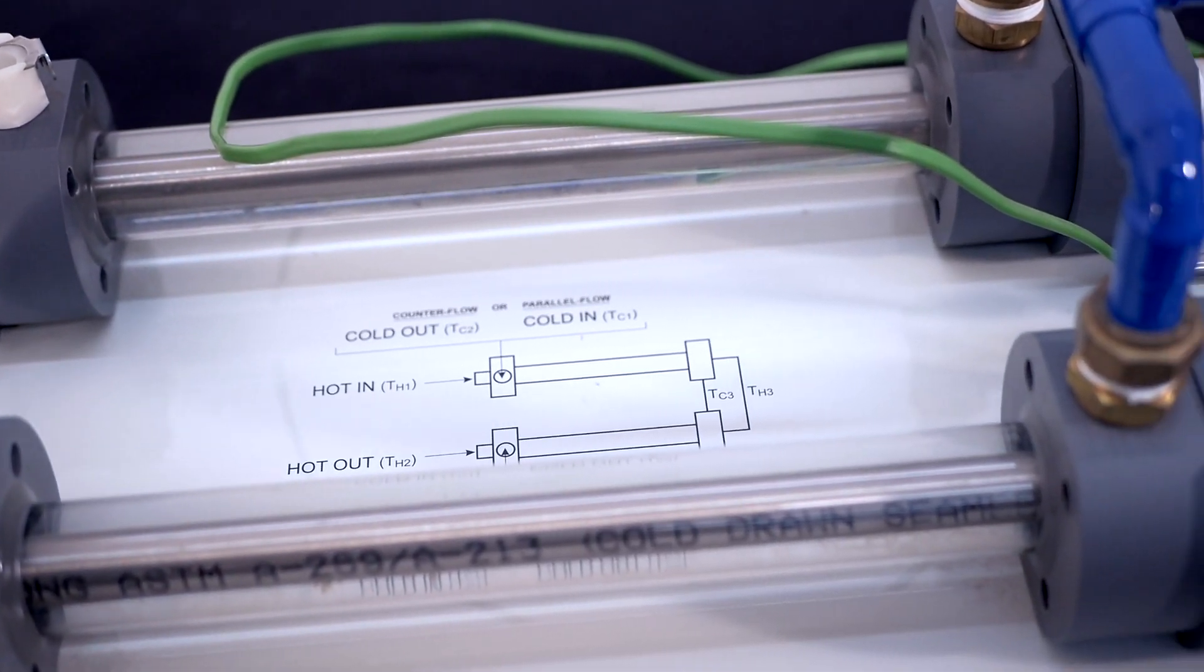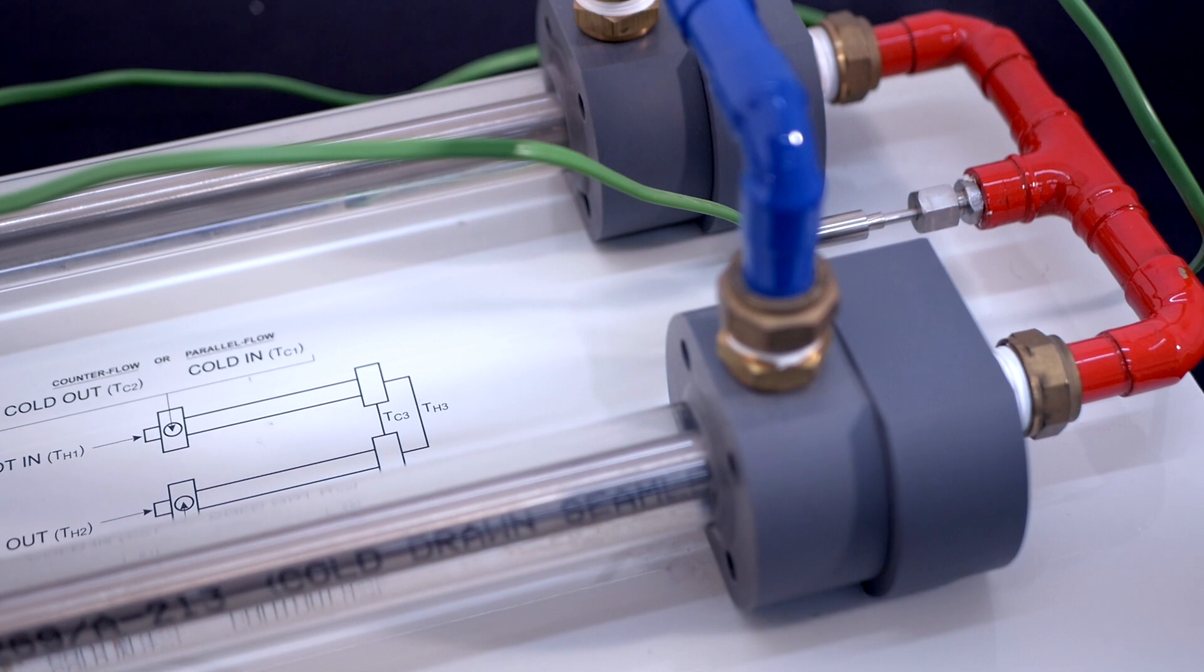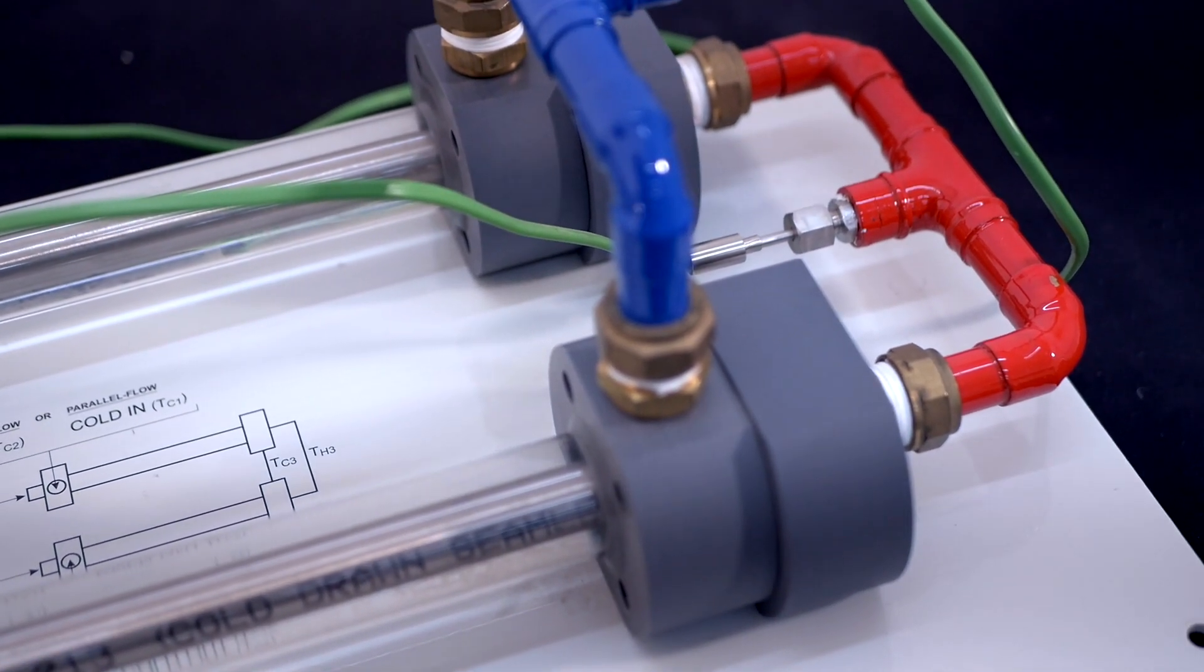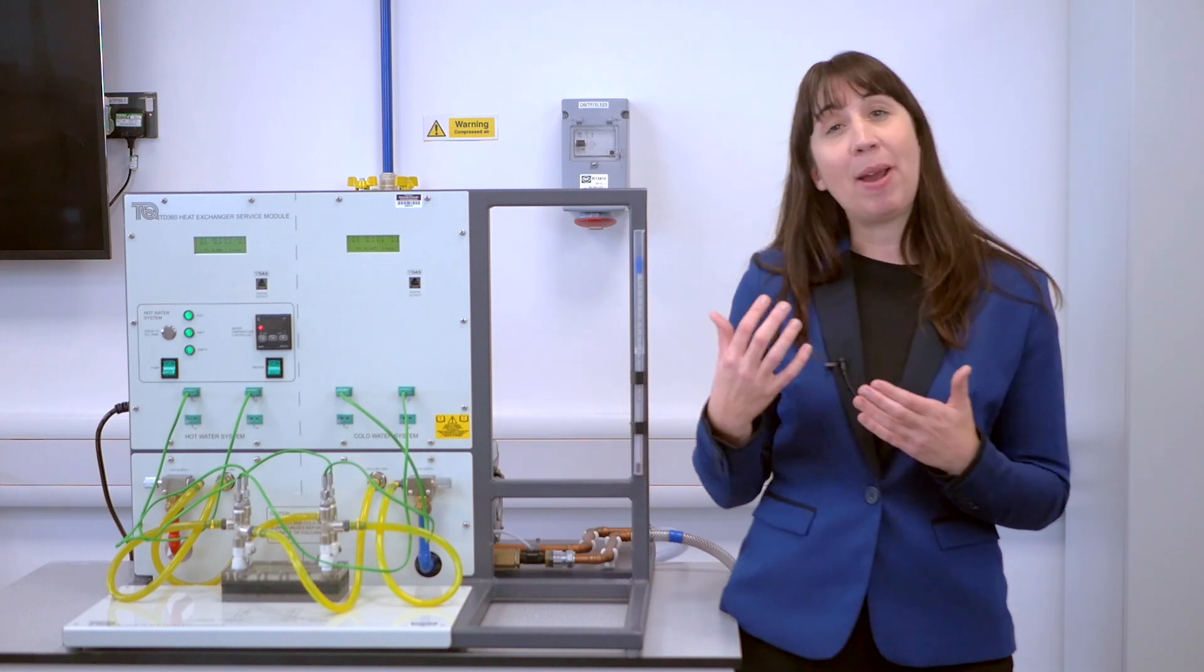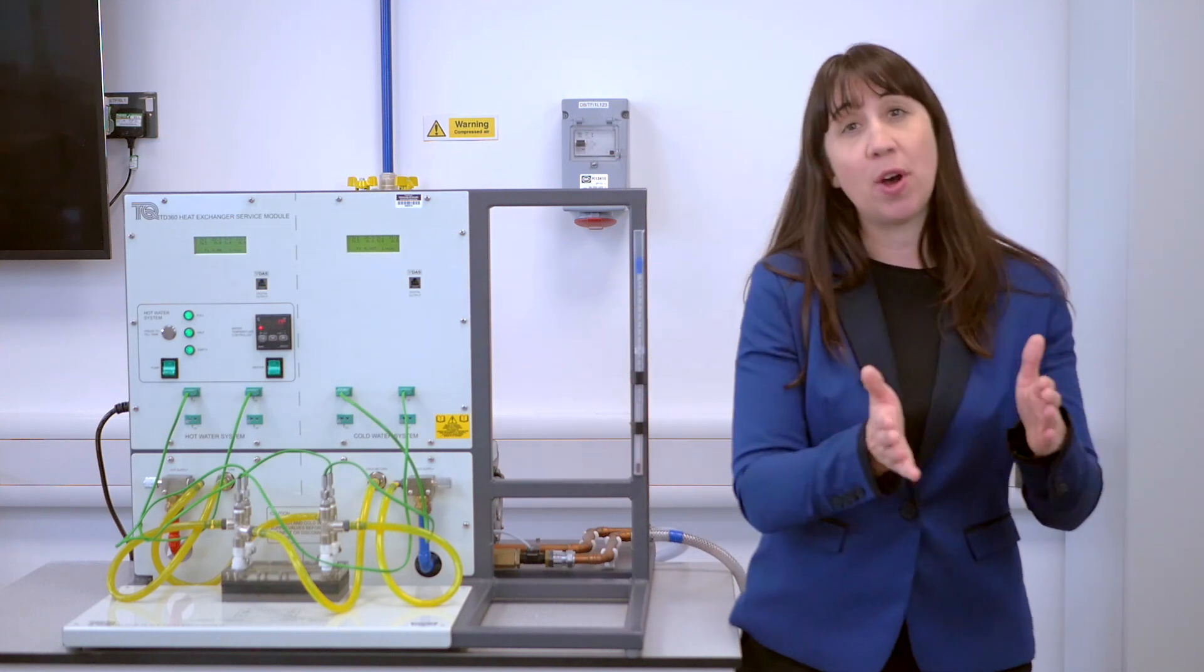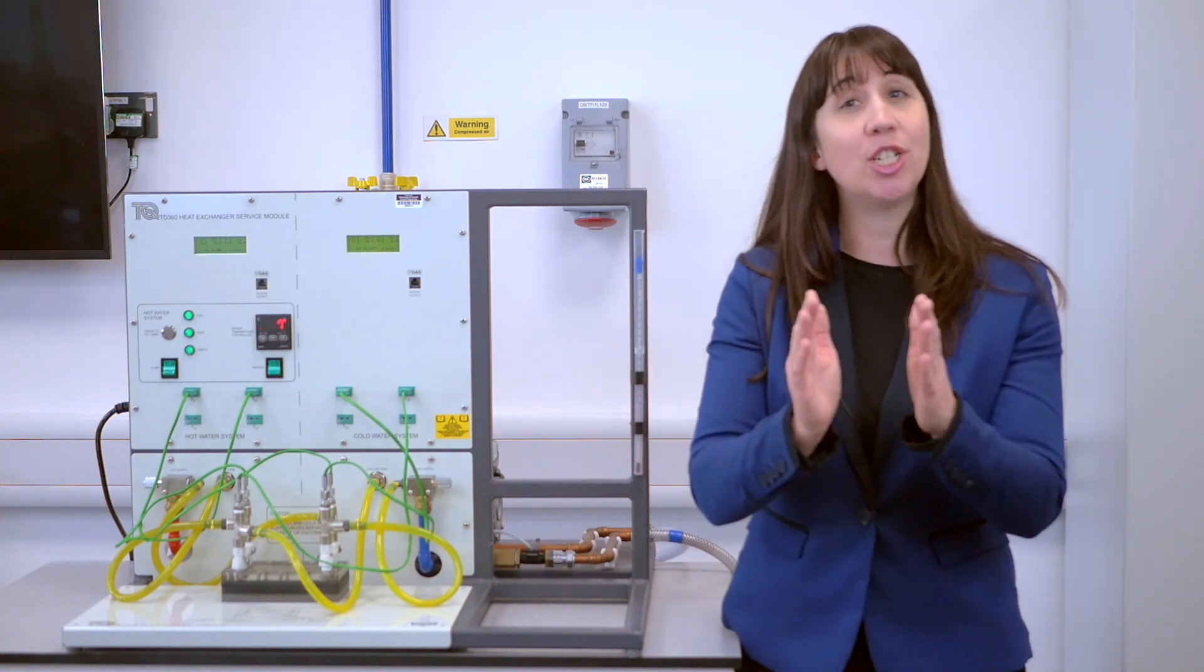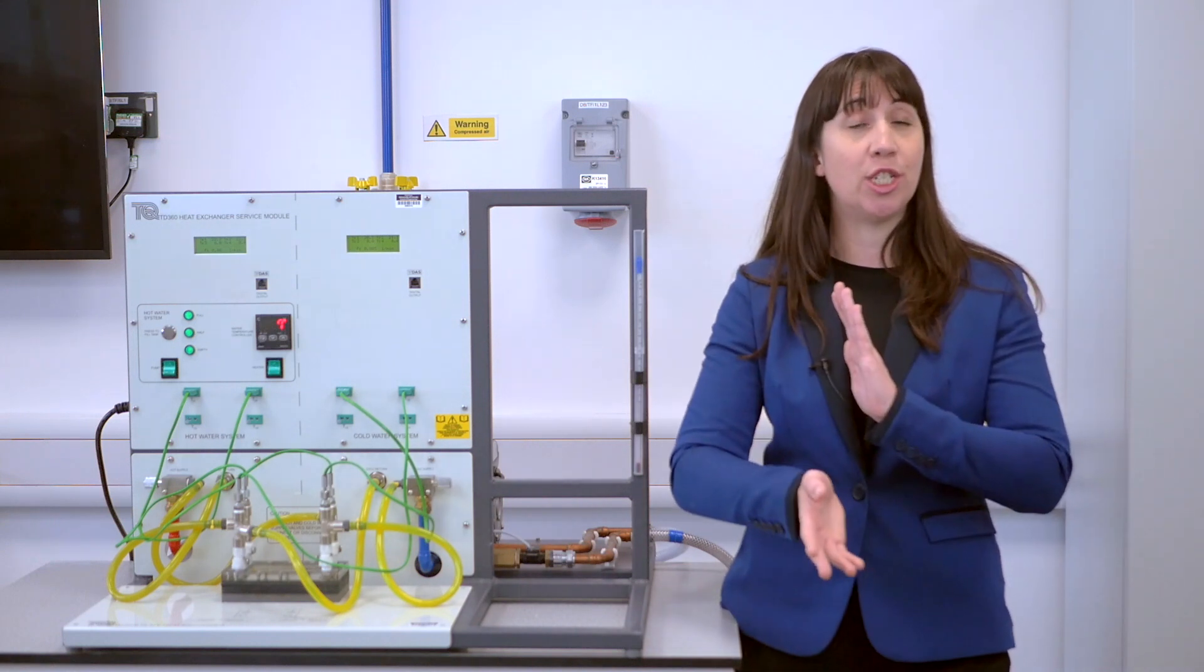The inner tubes carry the water from the hot circuits of the service module and the other known as the shell carries water from the cold circuit. Students can experiment with both parallel flow where the hot and cold are running in the same direction and counter flow where they run at opposite directions.